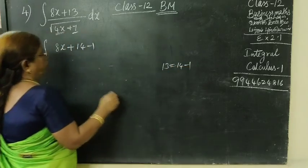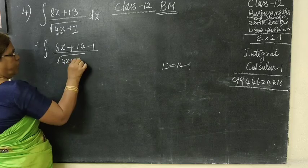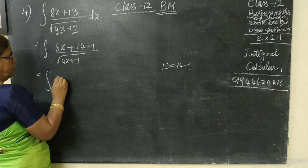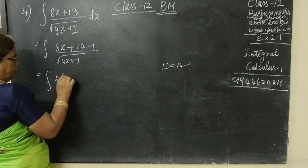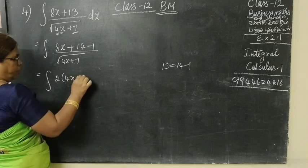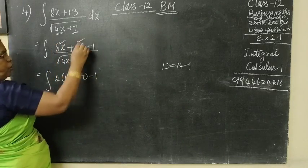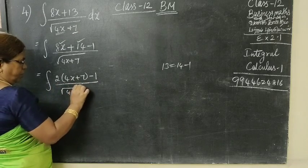Equal to integral. You can take 2 and combine it. If you combine 2, what will you get? 4x plus 7 will be there. Then minus 1 as it is. 2 can be combined by root of 4x plus 7.